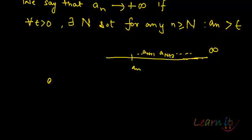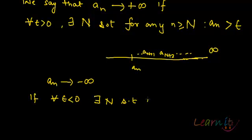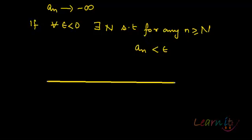In case a sequence tends to minus infinity, how do we define it? We say that it tends to minus infinity if, for all epsilon less than zero, there exists an N such that for any n greater than or equal to this N, a_n is in fact less than epsilon. Basically, on the real line we have a_n, a_{n+1}, a_{n+2}, and so on, moving in the negative direction — and this is less than some epsilon. Remember on the negative side it is decreasing: minus 1 is greater than minus 2, and so on.